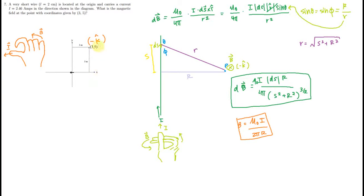So let's think about what this question is really asking. We have a very short piece of wire and we want to figure out the magnetic field at this point due to that tiny, tiny piece. That sounds a lot like what a little ds is doing here at point P. So we can use the infinite wire approximation to figure that out. The next question is: do we use the dB equation or the total field equation? Well, the dB equation gives the tiny contribution from a tiny piece, while the other equation is for the entirety of the wire. So the equation we're going to use in this problem is the dB equation.